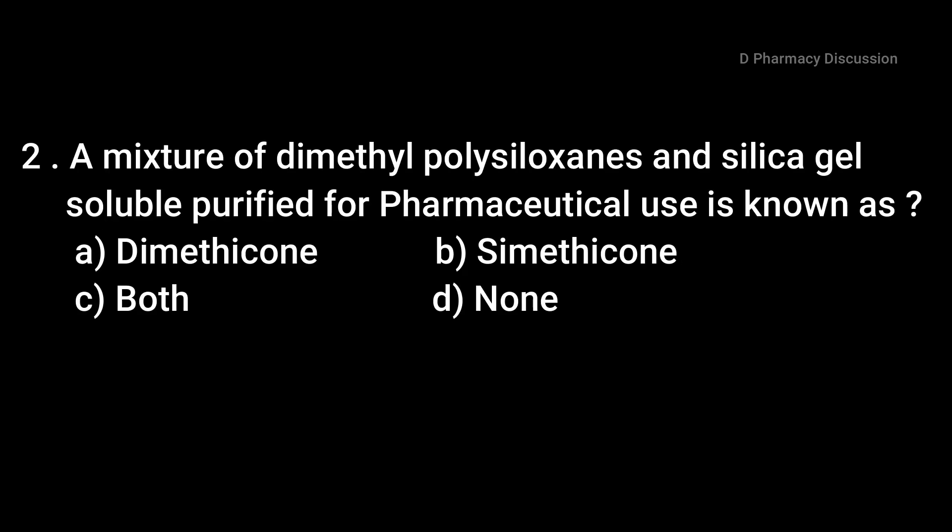Question 2: A mixture of dimethyl polysiloxane and silica gel, purified for pharmaceutical use, is known as — option A: dimethicone, B: cymethicone, C: both, option D: none. Correct answer is option C, both — that is dimethicone and cymethicone.